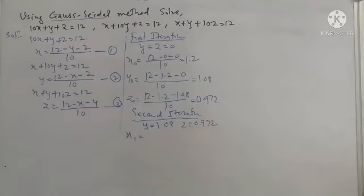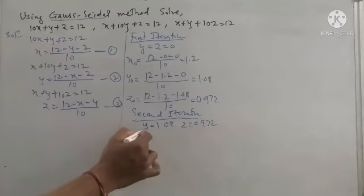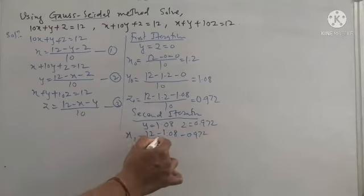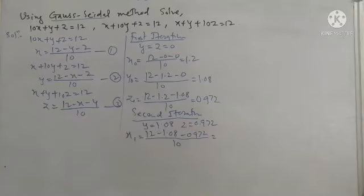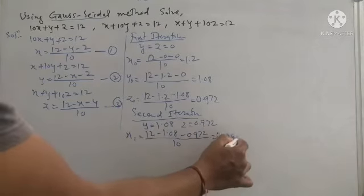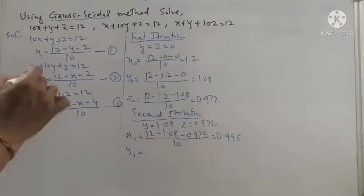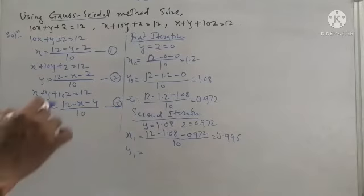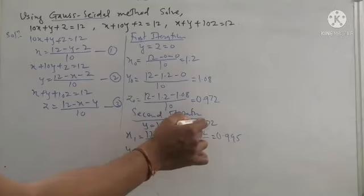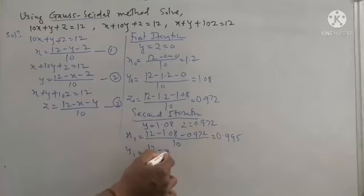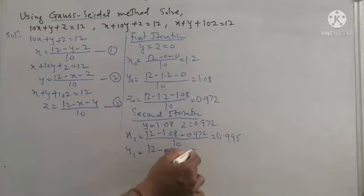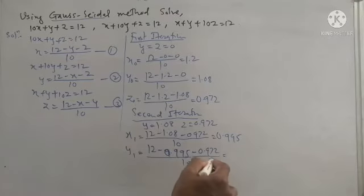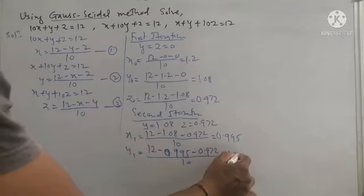In the second iteration, x₁ is denoted by x1. To find x1, we put y = 1.08 and z = 0.972 in equation 1: (12 - 1.08 - 0.972) / 10 = 0.995. For y1, we use equation 2, putting x = x1 = 0.995 and z = 0.972: (12 - 0.995 - 0.972) / 10 = 1.003.